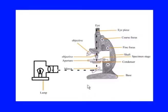Compound microscopes can be of different kinds. They could be simple with different optics like fluorescence optics, phase contrast microscope, stereo microscope, or even inverted microscope, and so on.